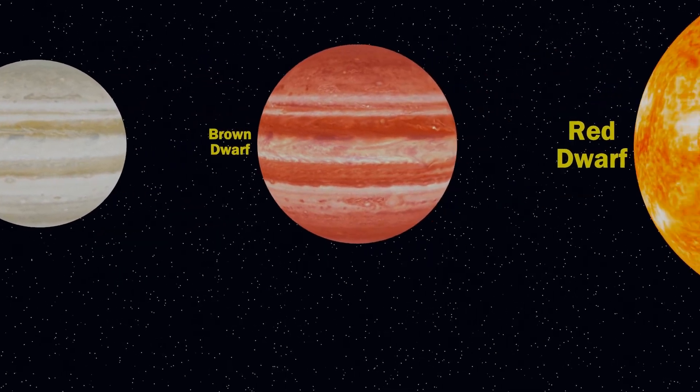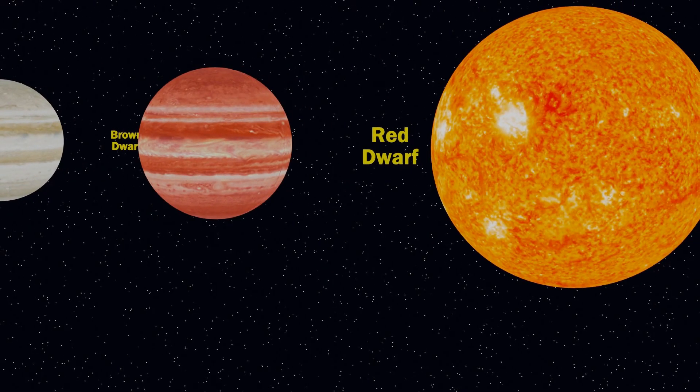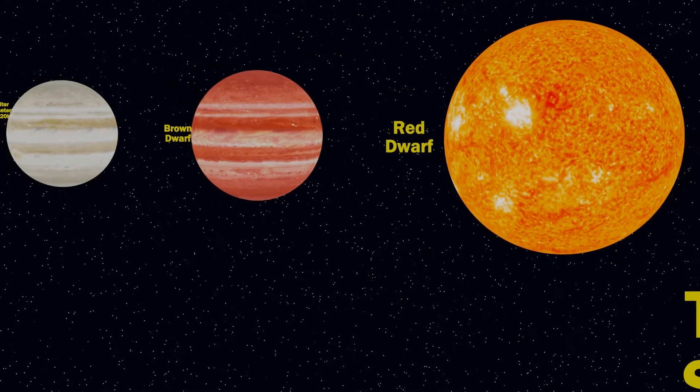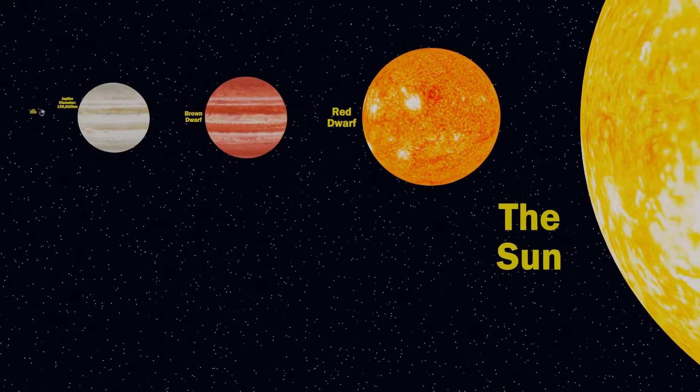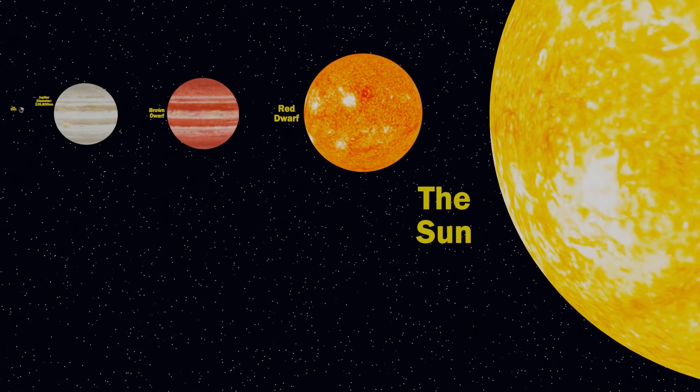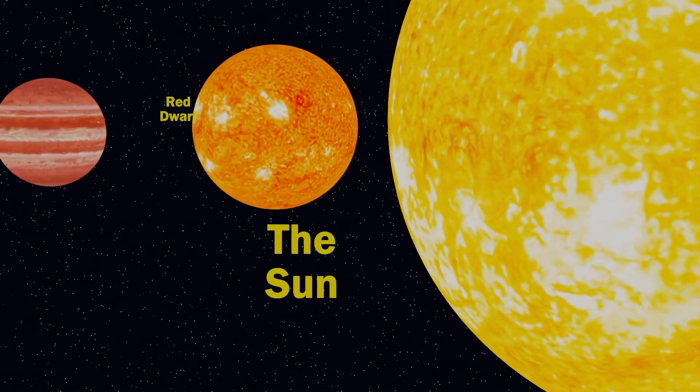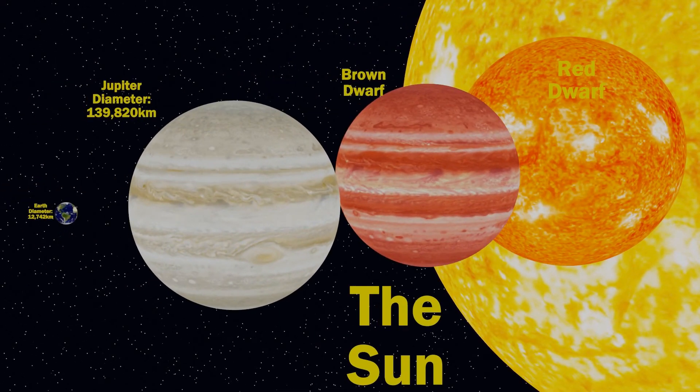Even though they don't fuse hydrogen atoms, some brown dwarfs are able to fuse deuterium, because the density needed to fuse deuterium is less than the density that you need for hydrogen. Deuterium is not as common as hydrogen though, and so over time, as they use up their deuterium, brown dwarfs will get colder and colder. As always though, it's not quite as simple as that. There are actually different types of brown dwarf.